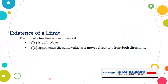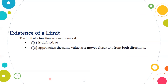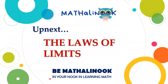Therefore, we can say that the limit of a function as x approaches c exists if f(c) is defined, or if f(x) approaches the same value as x moves closer to c from both directions. We will have more examples about evaluating limits as we study evaluation of limits and the laws of limits in our next video.